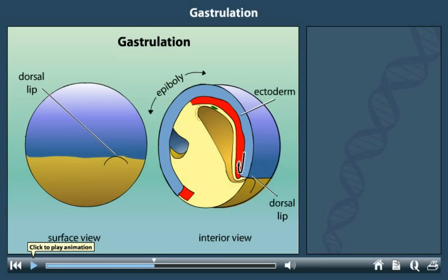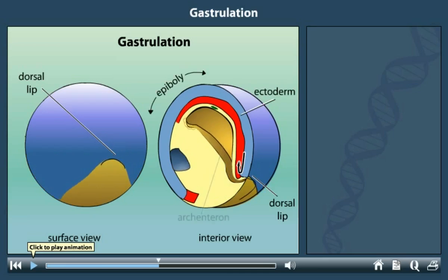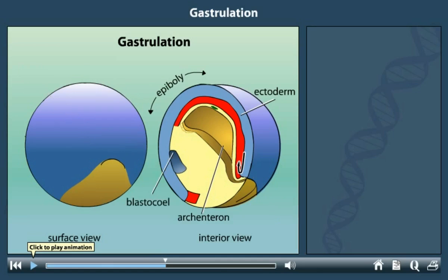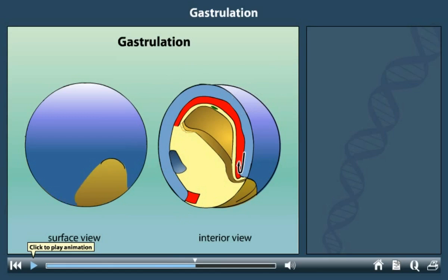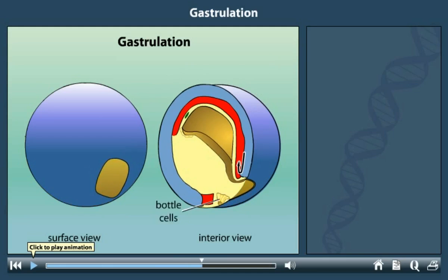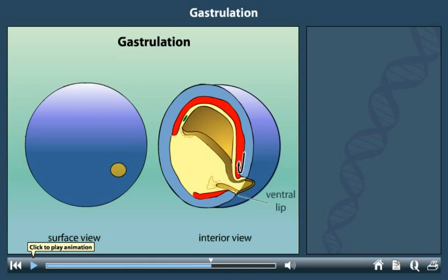As gastrulation proceeds, a cavity called the archenteron forms while the blastocele progressively shrinks. The archenteron is the primitive gut and is completely surrounded by endodermal tissue. The endoderm at the roof of the cavity originated from the outside of the embryo. The cavity is continuous with the outside via the blastopore, which eventually becomes the anus of the animal. As the ectoderm extends around the embryo, another set of bottle cells forms, migrating into the embryo with other surface cells following, creating the ventral lip of the blastopore.